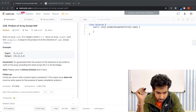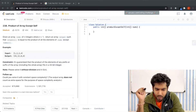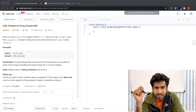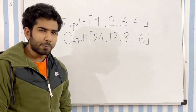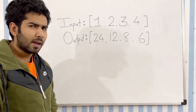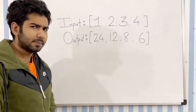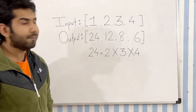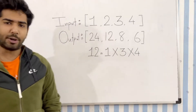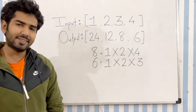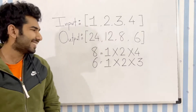Given an array nums of n integers, return an array output such that output[i] is equal to the product of all the elements of nums except nums[i]. To simplify: if the given input array is [1, 2, 3, 4], the output array will be [24, 12, 8, 6]. 24 is the product of 2, 3, and 4 — all elements except 1. Similarly, 12 is the product of all elements except 2, 8 is the product of all elements except 3, and 6 is the product of all elements except 4.